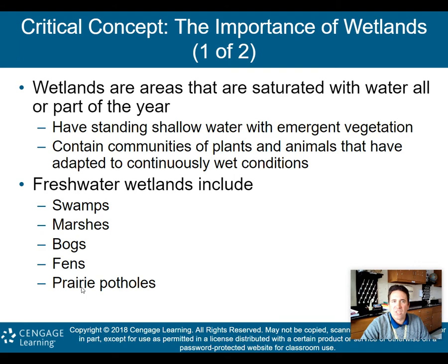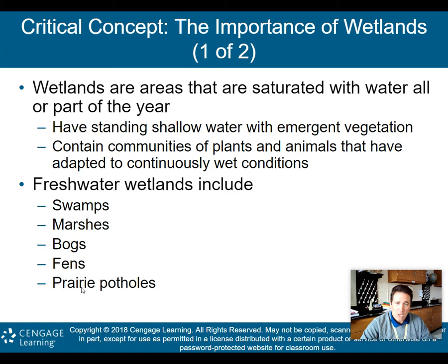Critical concept: the importance of wetlands. Wetlands are areas saturated with water all or part of the year, with standing shallow water and emergent vegetation. They contain communities of plants and animals that have adapted to continuously wet conditions — unlike the intertidal zone where organisms evolved to handle wet-dry cycles, wetland organisms have evolved to deal with continuously wet conditions.